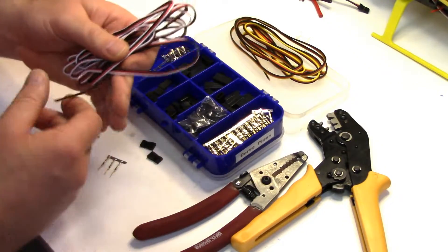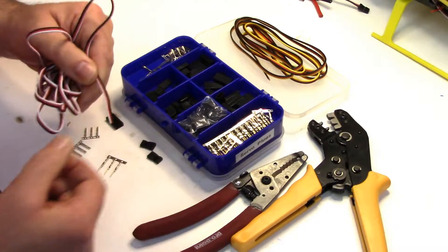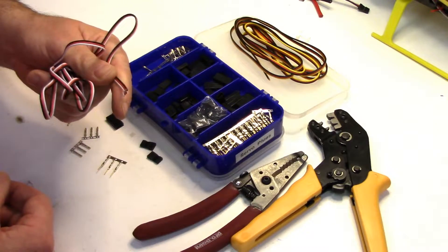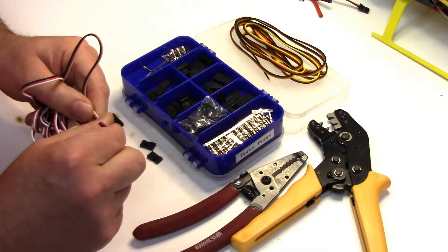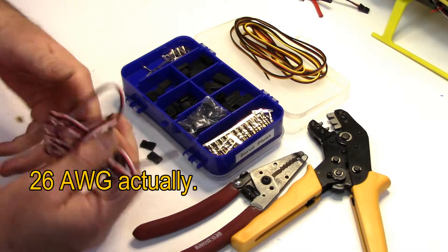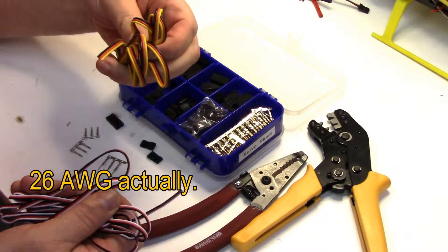There's different types of servo wire. There's twisted stuff. There's the ribbon type. I generally use the ribbon. This is the smaller gauge. I think this is 24 gauge and I believe this is 22.